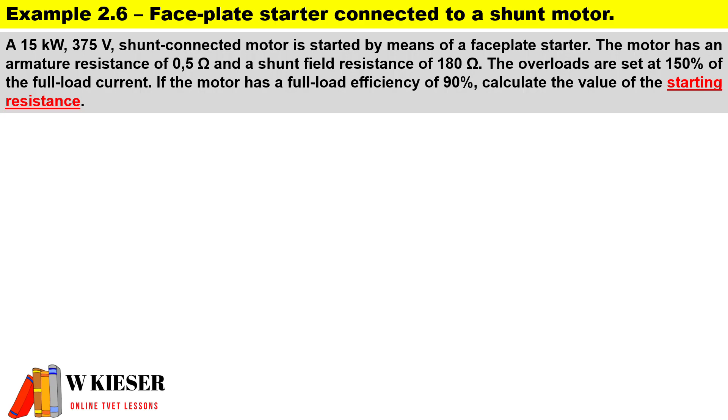If the motor has a full load efficiency of 90%, calculate the value of the start resistance. Most importantly, this is a shunt-connected motor. To calculate the start resistance, this is the value of the resistors put in series with the armature in order to protect the motor. We have voltage divided by Ia max minus Ra.